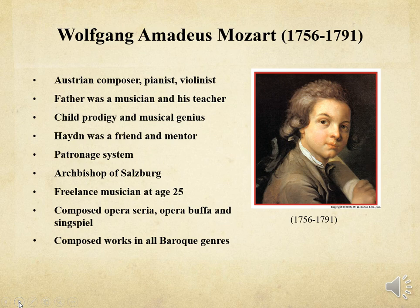As Mozart grew older, he rebelled against the social restrictions of the patronage system, which resulted in his dismissal by his patron, the Archbishop of Salzburg. Mozart then began a career as a freelance musician at the age of 25. He produced his most successful operas with Lorenzo da Ponte, who was the librettist for The Marriage of Figaro and Don Giovanni. Vienna loved The Marriage of Figaro. The city of Prague loved Don Giovanni. It was written for the Prague Opera, but it was not well received in Vienna because Mozart's comic operas underscored class and gender inequality. These operas still resonate with audiences today.